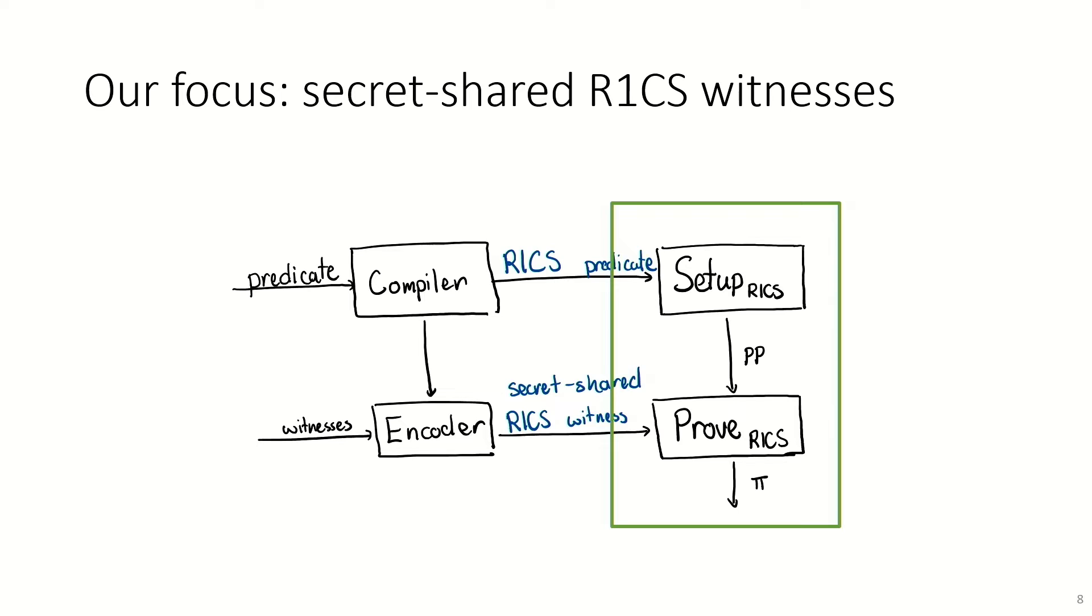And then once you have this, the R1CS predicate and the secret-shared R1CS witnesses, this is where our work comes into the picture. We essentially develop collaborative ZK-SNARKs for secret-shared R1CS witnesses. This kind of division, as I said, is standard. This is how conventional ZK-SNARKs work. And the advantage of it is it separates the details of a particular relation from how you go about building the proof system, a division of concerns, if you would. The one difference in how this division works in our scenario is that the encoder is now a multi-party protocol.